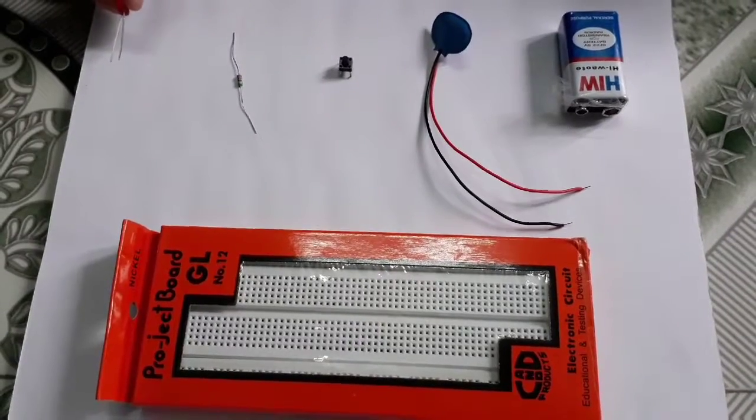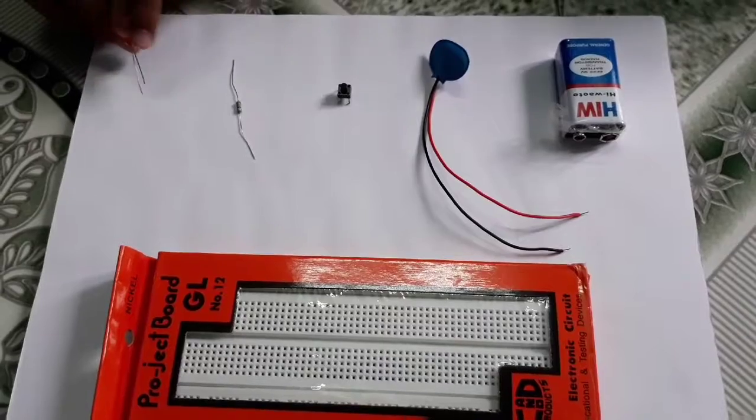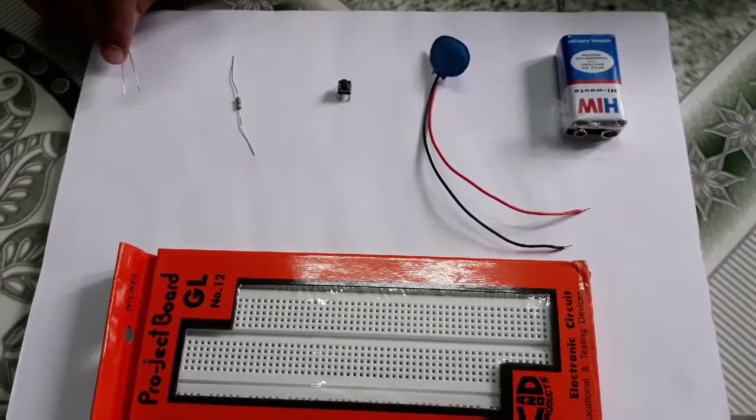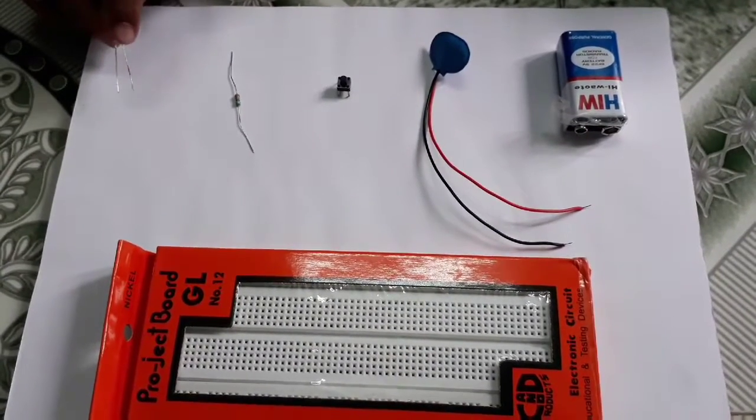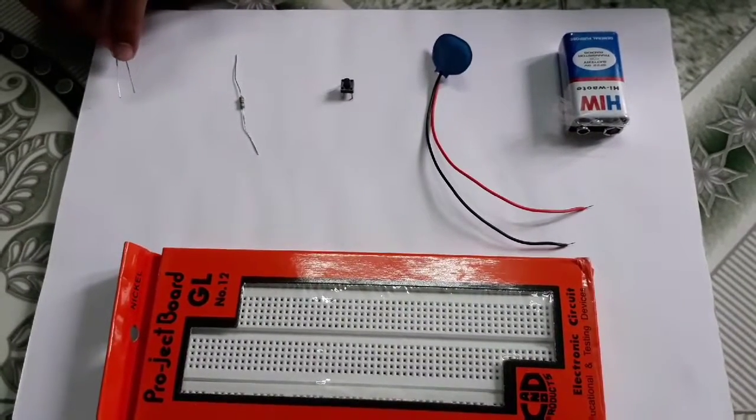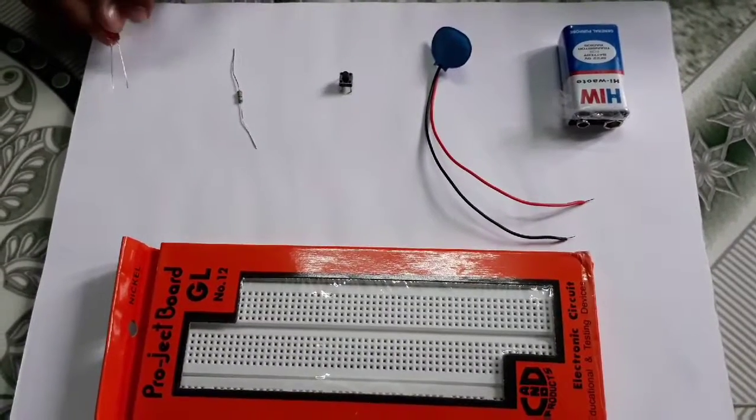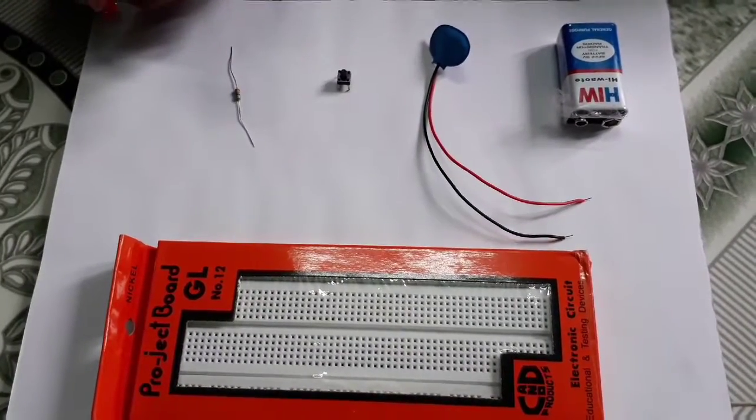LED means light emitting diode. LEDs have two terminals. One is positive, which is long in size and also called the anode. One is negative, which is short in size and also called the cathode. It has a flat edge.